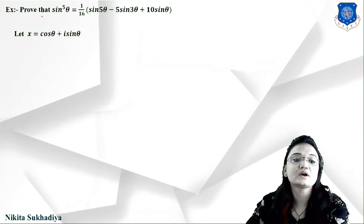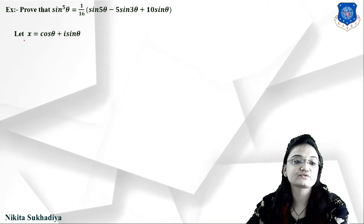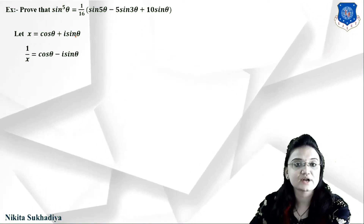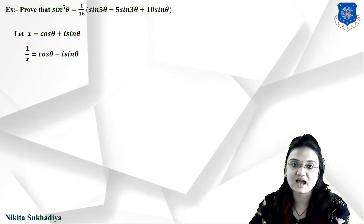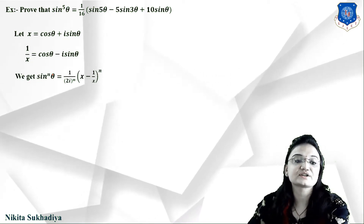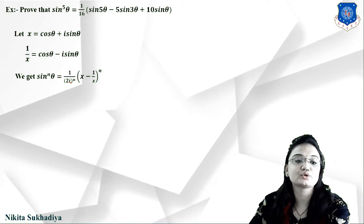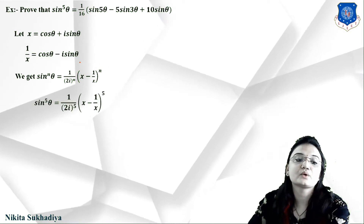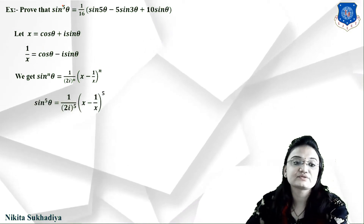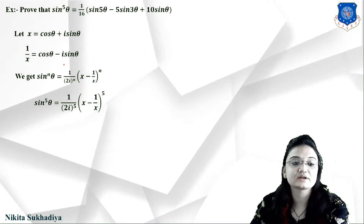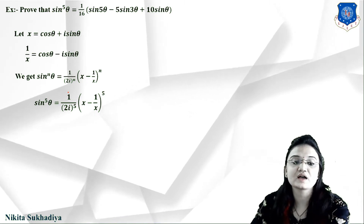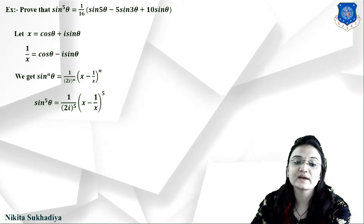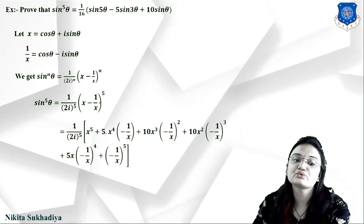Here we have sin⁵θ. Let x = cosθ + isinθ and 1/x = cosθ − isinθ. Using the formula sin^n(θ) = (1/(2i)^n)(x − 1/x)^n with n = 5, our equation becomes (1/(2i)^5)(x − 1/x)^5.